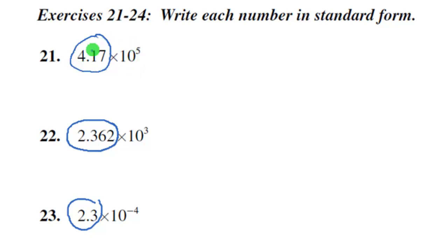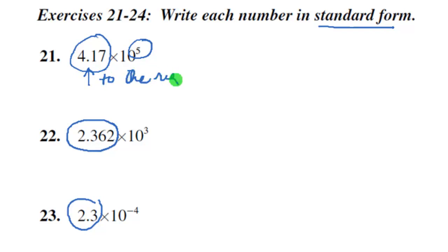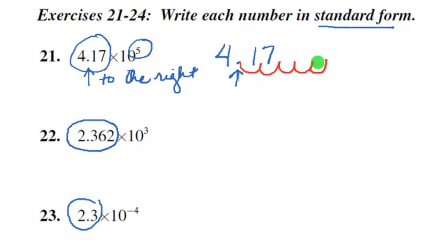To change a scientific notation number back to its standard form, we use the exponent. When we have a positive exponent, we are going to take the decimal point and move it to the right. We move it to the right 5 slots because our exponent is 5. There is our decimal point, and now we move it 5 slots to the right — 1, 2, 3, 4, 5. We fill the missing slots with zeros. So our number in standard form is 417,000.